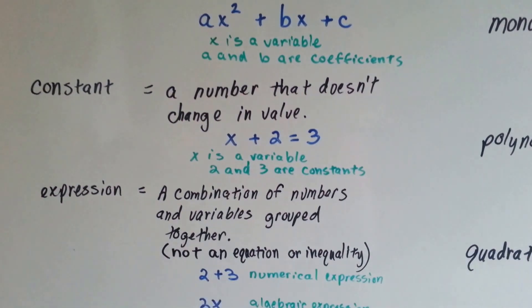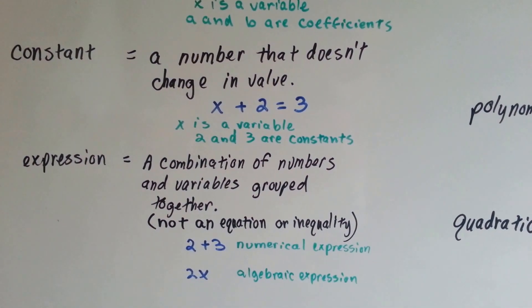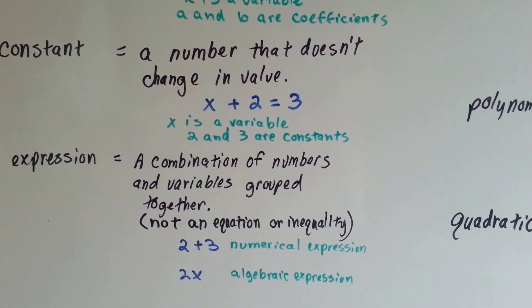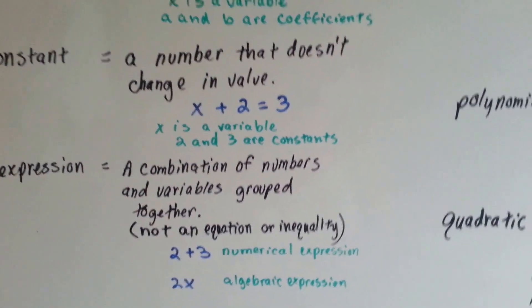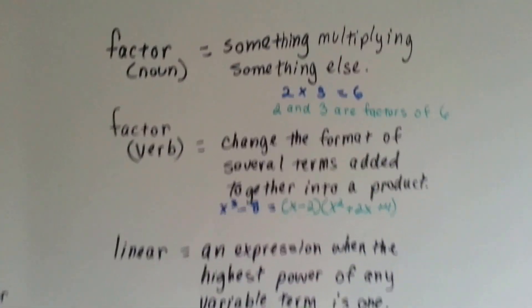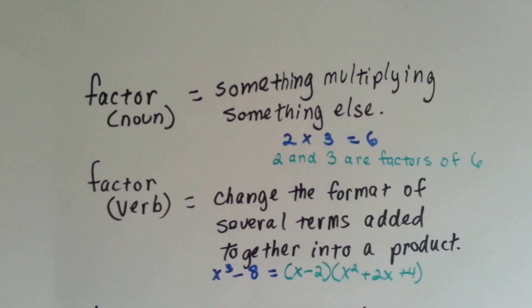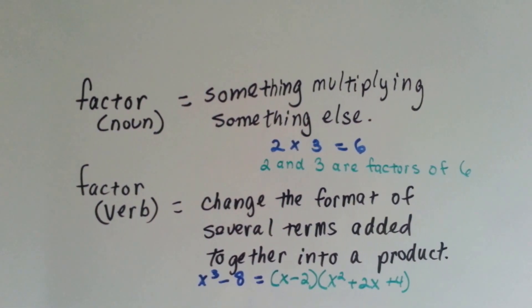An expression, it's a combination of numbers and variables grouped together. It's not an equation or an inequality. A factor, it's something multiplying something else. 2 and 3 are factors of 6.